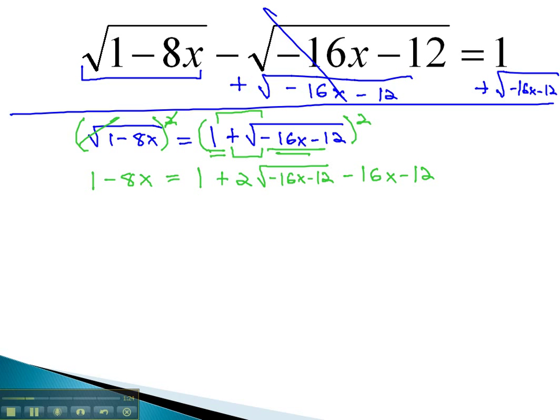Let's clean up that right side by combining like terms. We now have 1 minus 8x equals negative 11 plus 2 times the square root of negative 16x minus 12 minus 16x.